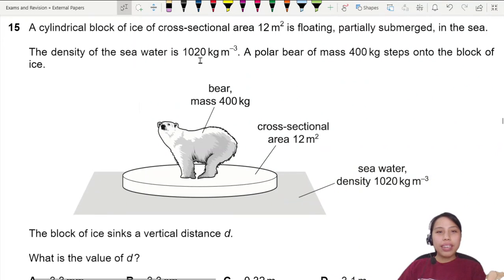A cylindrical block of ice of cross-sectional area 12 meter square is floating, so this is the block here floating, partially submerged in the water. The density of sea water is given to us, that's our rho which we will use later. A polar bear of 400 kg steps on the box. You see this cute polar bear?